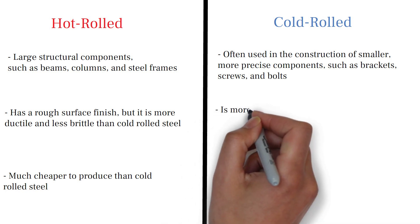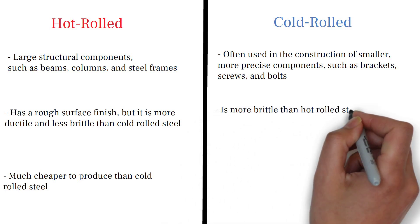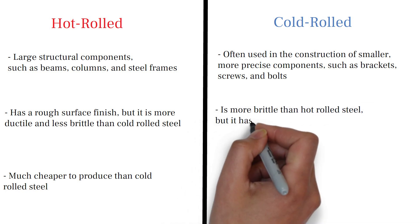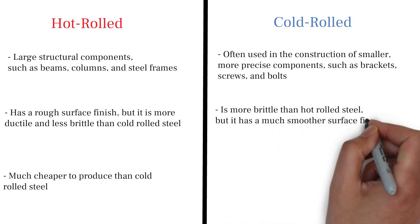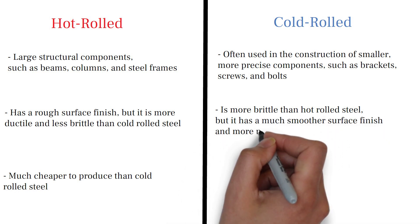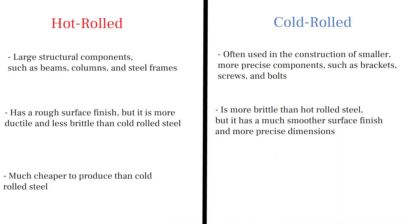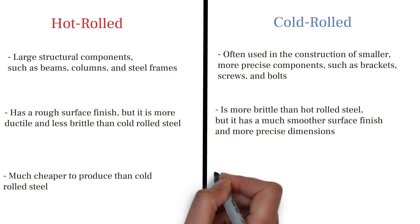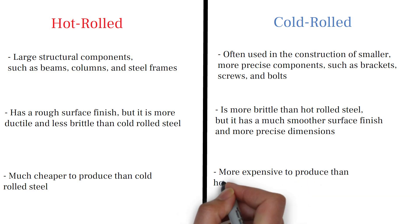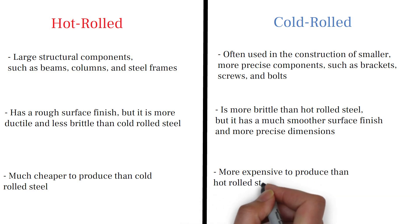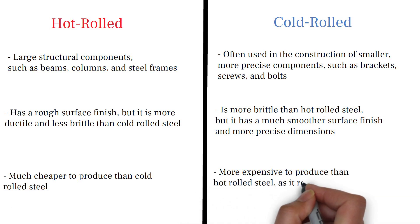Cold rolled steel is more brittle than hot rolled steel, but it has a much smoother surface finish and more precise dimensions, making it ideal for applications where a smooth finish or precise dimension is important. Cold rolled steel is more expensive to produce than hot rolled steel, as it requires additional processing.